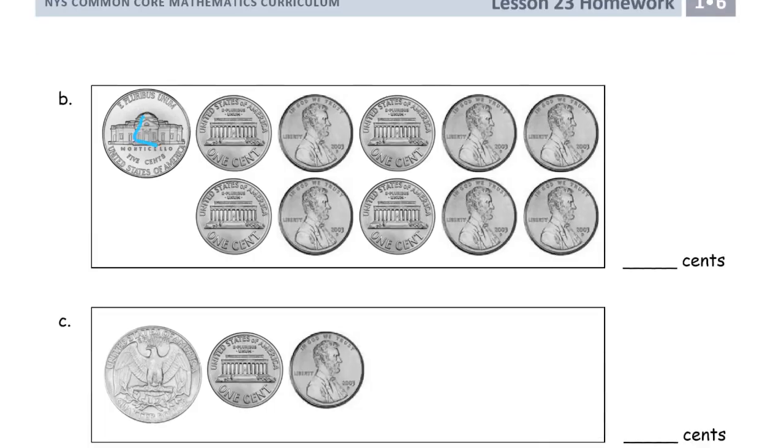Now here we have a nickel for 5. And it looks like we have 1, 2, 3, 4, 5. Yes we do. We have a 10 frame of pennies. So that's 10 cents, that whole thing right there. So 5 and 10, 15 cents.